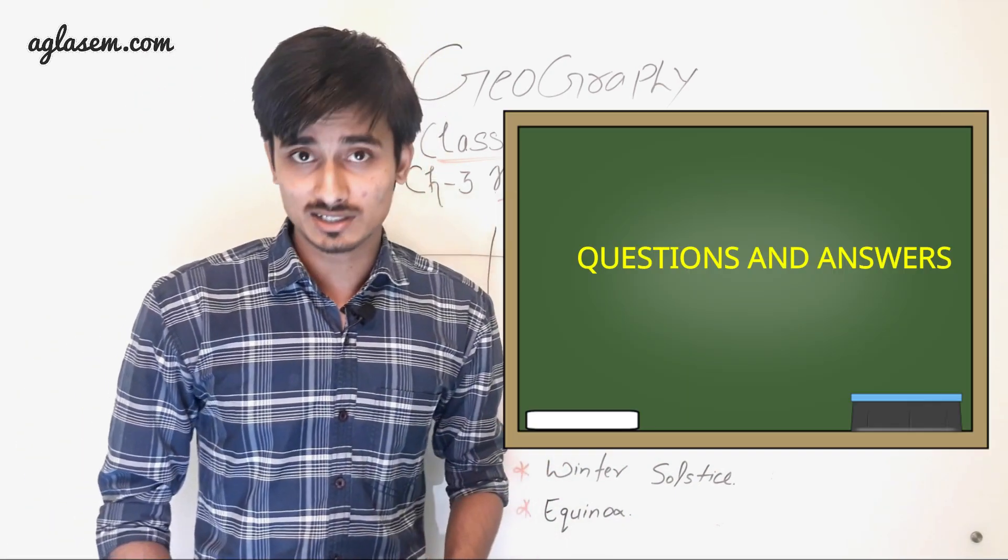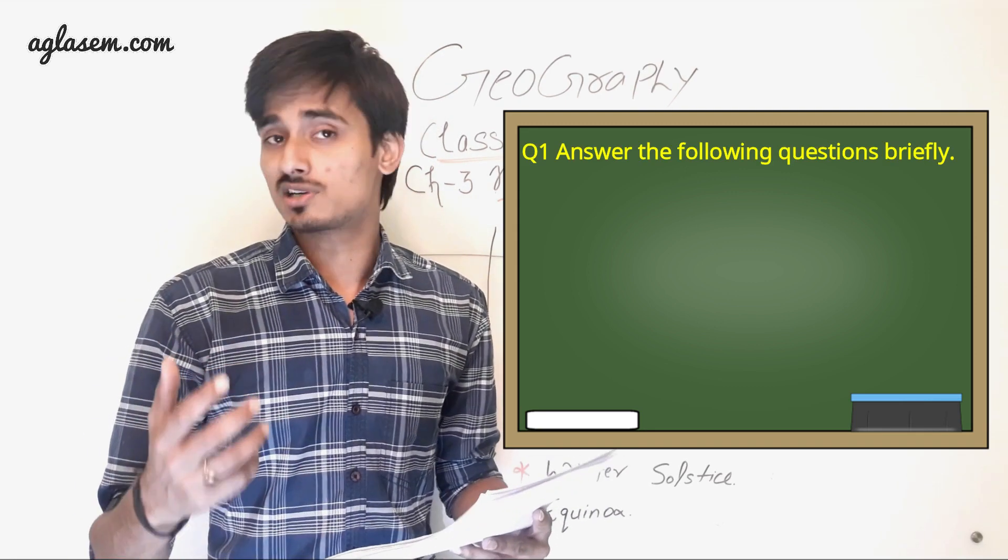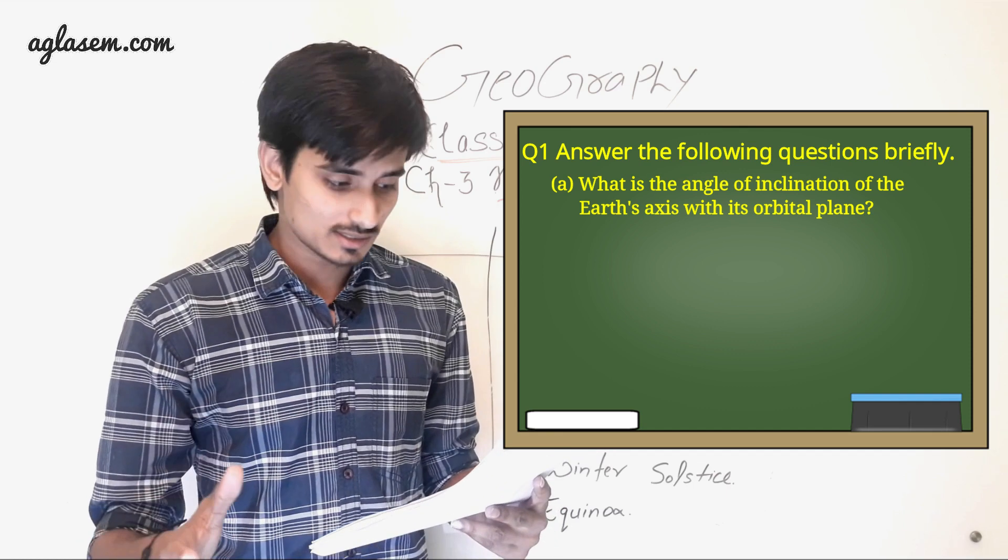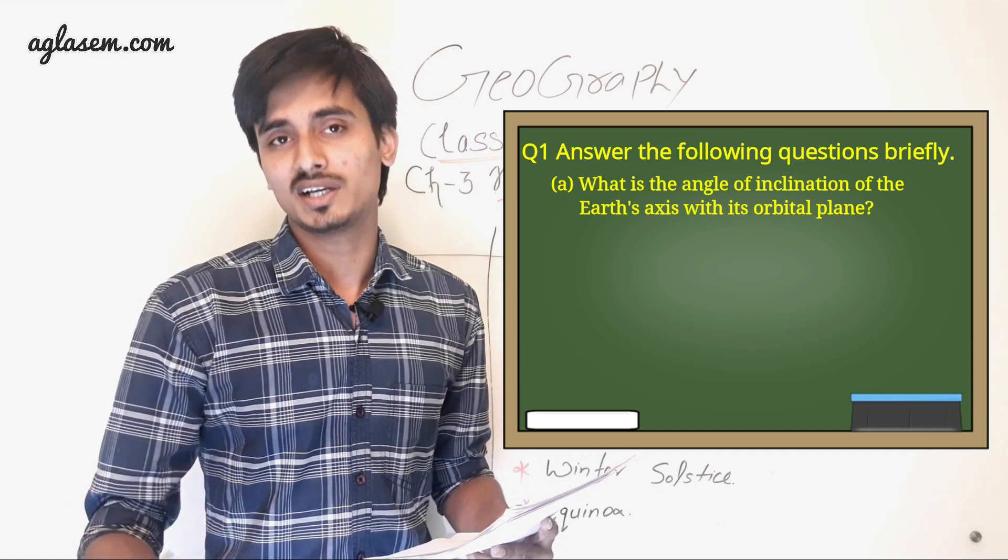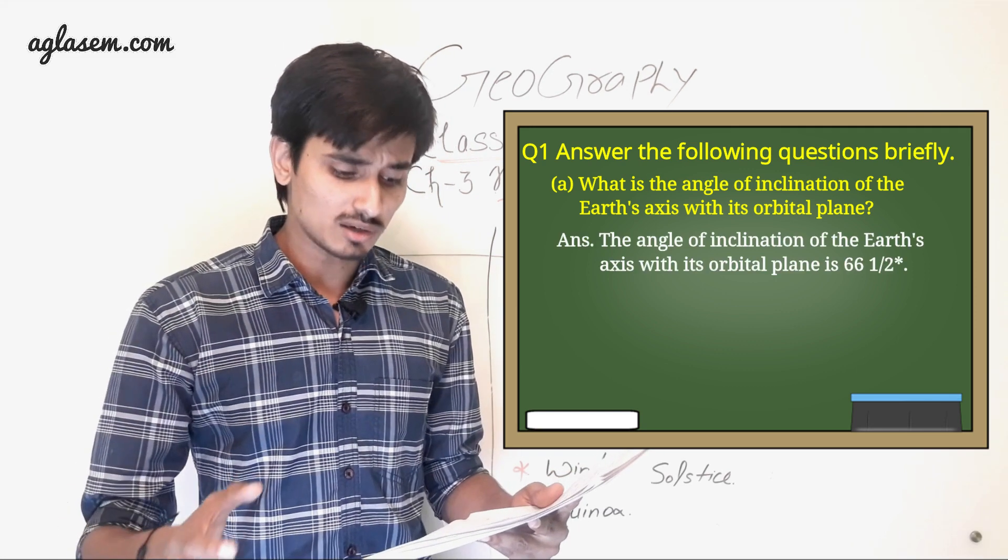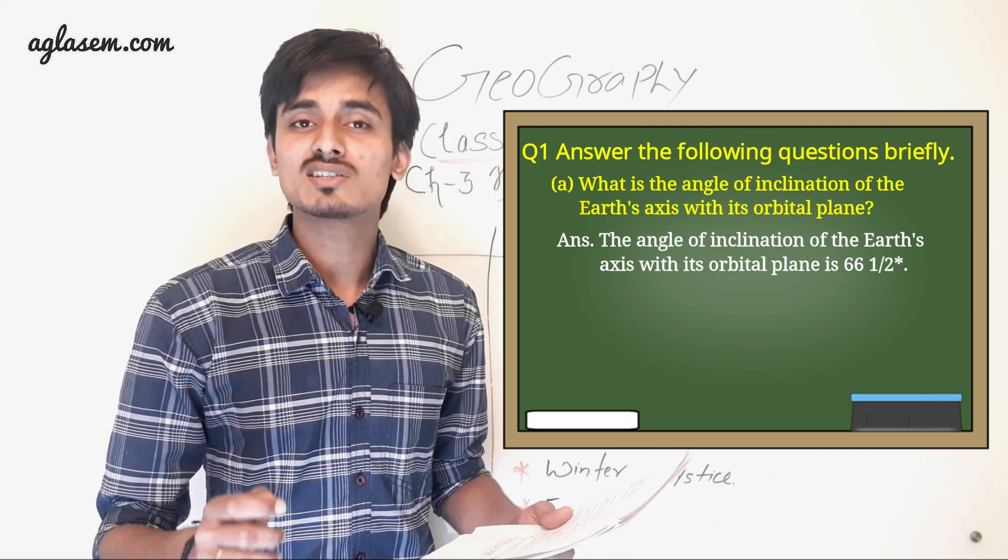So let's go to the question. First question: Answer the following question briefly. A. What is the angle of inclination of the Earth's axis with its orbital plane? So answer is: The angle of inclination of the Earth's axis with its orbital plane is 66 and 1 by 2 degree.